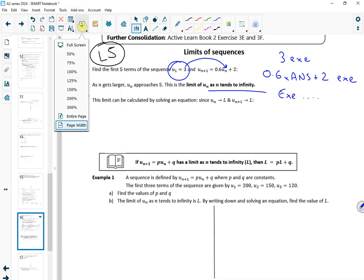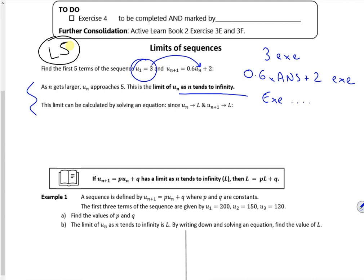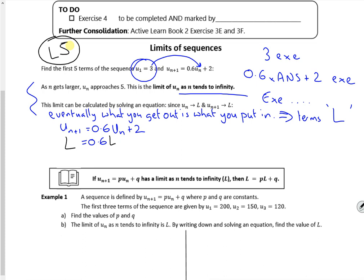So if I do it with the, right, how do you break me now? So the idea with this is that the number you get out is the same as the number you put in. Because this is recursive. So eventually, does that make sense? So eventually what you get out is what you put in. So eventually I'll put 5 in and get 5 out. If I do that, what I can do is I can call the terms L.